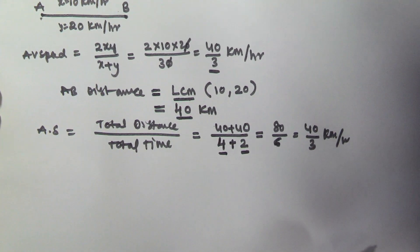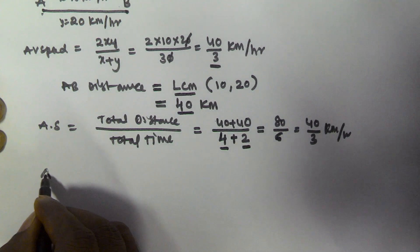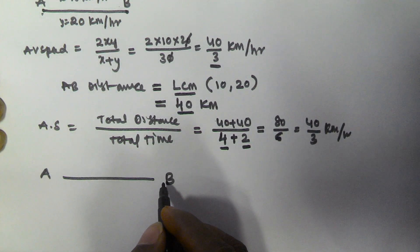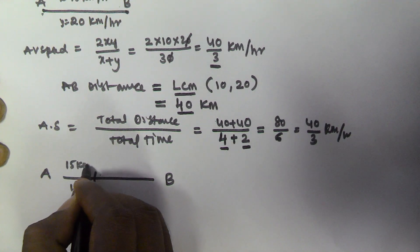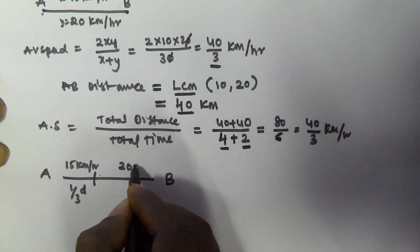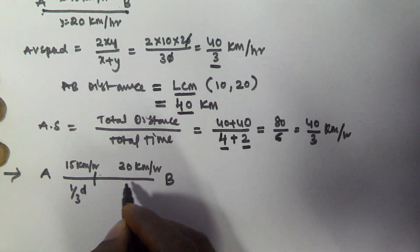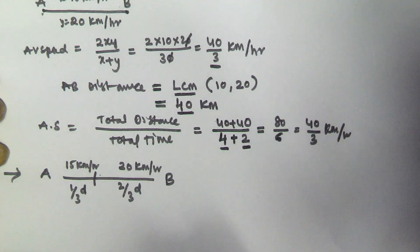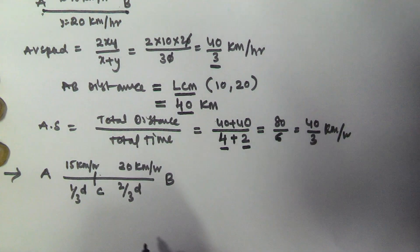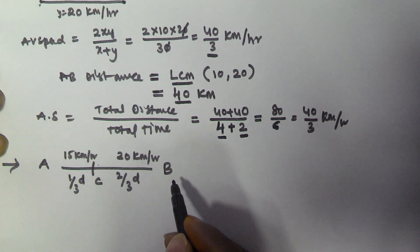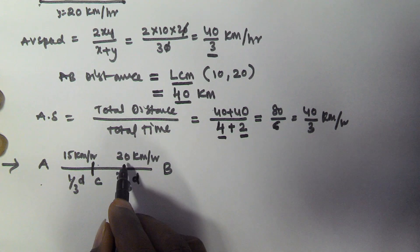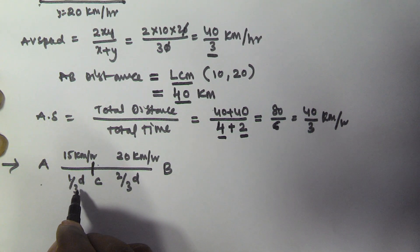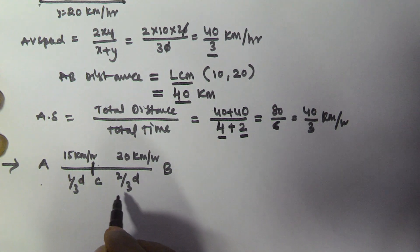Let's see another problem. A person travelled from A to B, where 1/3 of the distance was travelled at 15 km per hour and the remaining 2/3 of the distance at 20 km per hour. Let us call the intermediate point C. So he travelled A to C at 15 km/h over distance (1/3)D, and C to B at 20 km/h over distance (2/3)D. We need to find the average speed from A to B.